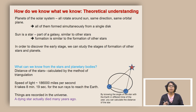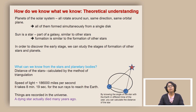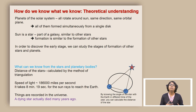If we observe what other stars are showing us, that will give us some information about how the sun behaved in its early phase. In order to discover the early stage, we can study the stages of formation of stars and other planets, and we can also use some of the basic physical laws obeyed by large as well as small objects, and these would tell us some general ideas of how everything can start.